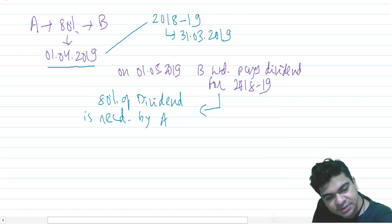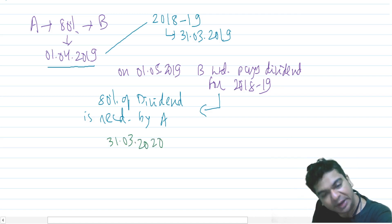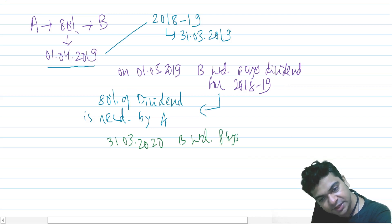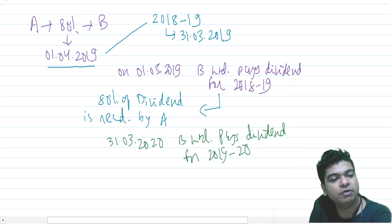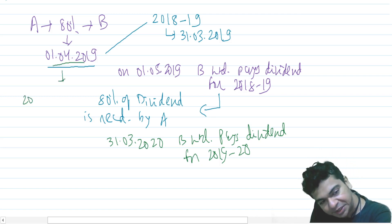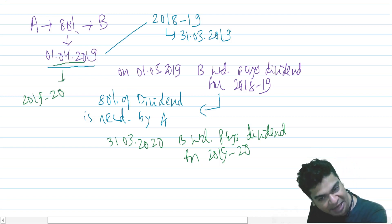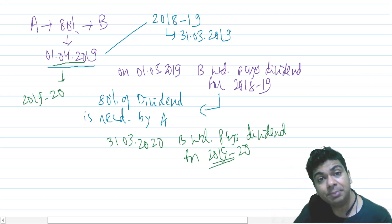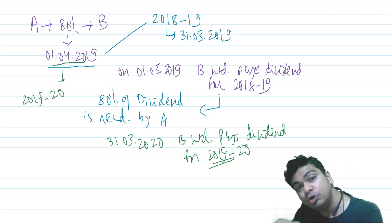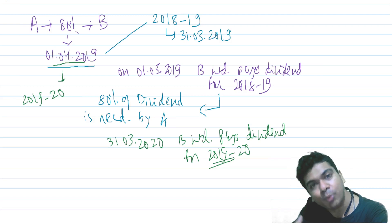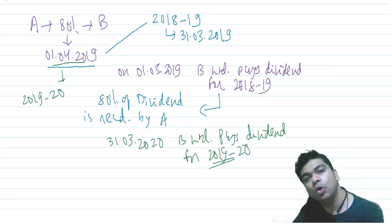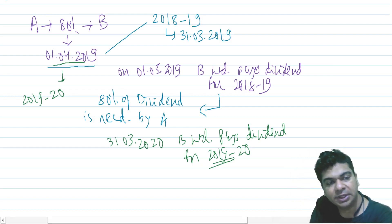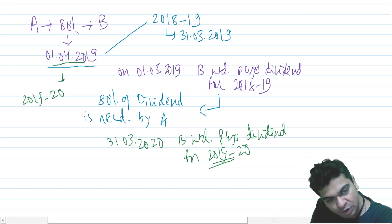Now let's take another possibility. It is 1st April 2019 when shares are acquired, and on 31st March 2020 B Limited pays dividend for the year 2019-20. Since you bought shares on 1st April 2019, you have every right to participate in the profits earned in 2019-20. The dividend is for the period after you acquired the shares, so you have every right to participate. This dividend should be credited entirely to the profit and loss account of A.